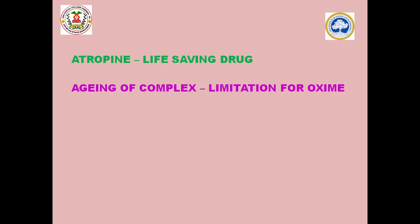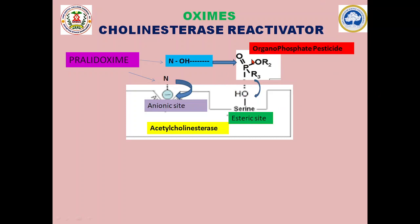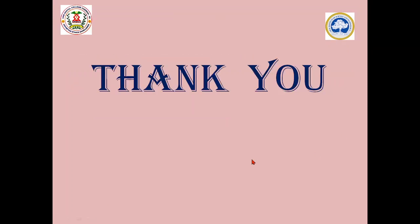So as early as possible, once we determine that the toxicity is due to organophosphate pesticide, we must first give atropine — the life-saving drug — to the patient, and then immediately start giving oximes. The earlier the oxime is given, the higher the success rate of cholinesterase reactivation. Thus, oxime drugs like pralidoxime and obidoxime act as scavengers, scavenging the pesticide from the esteric site of the cholinesterase and freeing the cholinesterase enzyme so that acetylcholinesterase is available for metabolizing acetylcholine. Thank you.